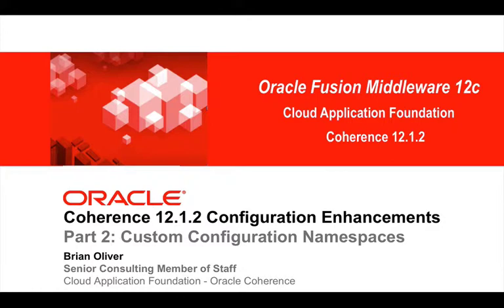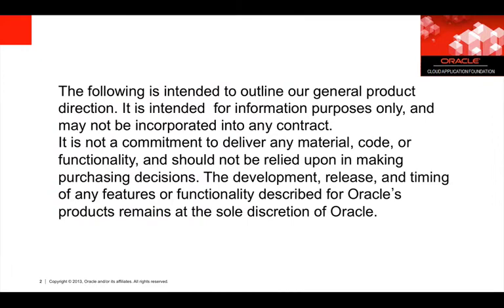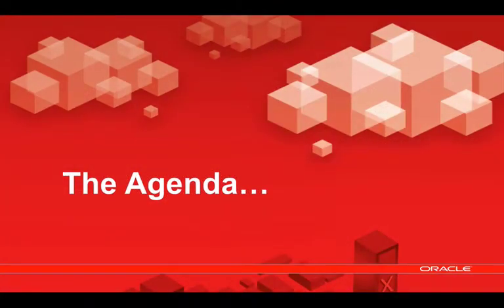Welcome to part two of our series on Coherence 12.1.2 Cache Configuration Enhancements. In this session we're going to look at custom configuration namespaces and how we can use these to get objects from other frameworks and containers and integrate them with Coherence. So let's look at today's agenda.